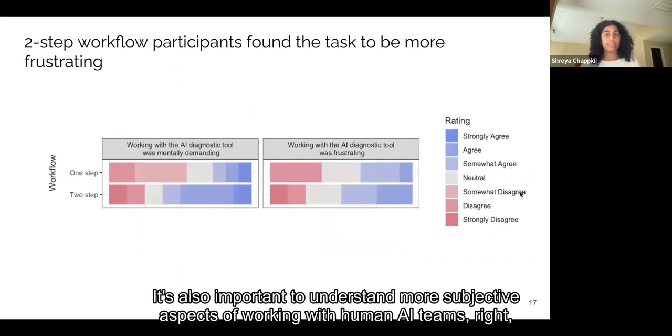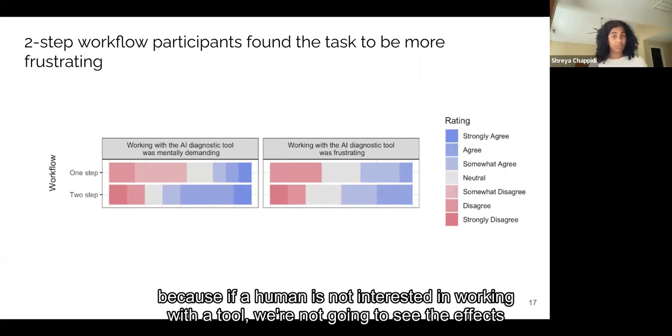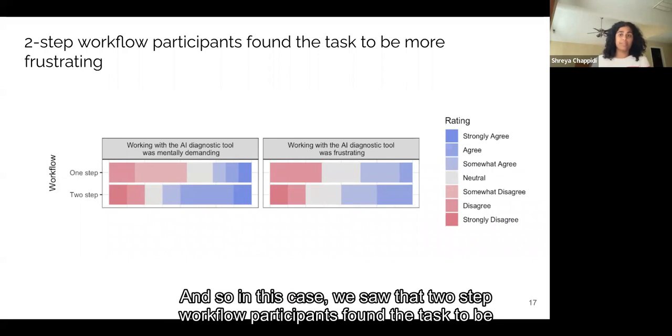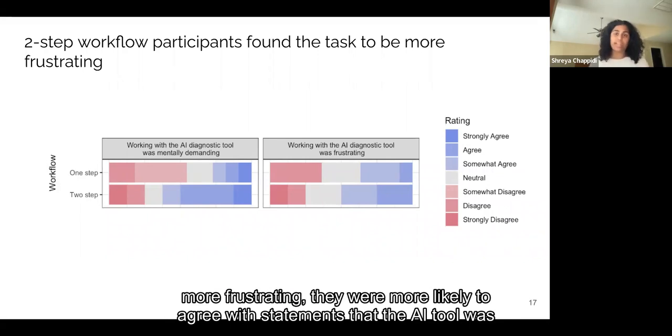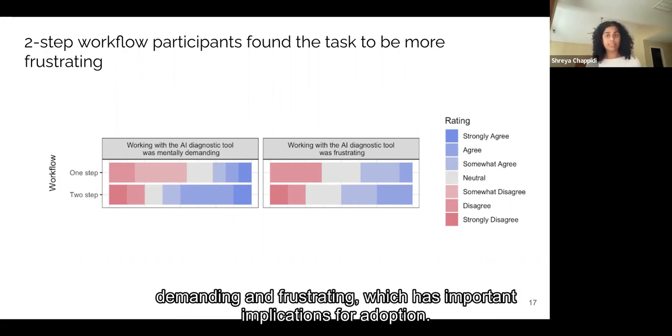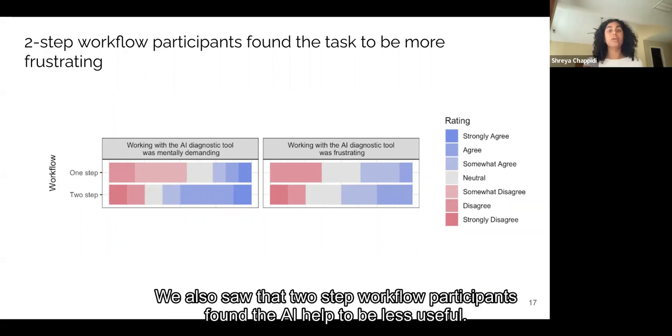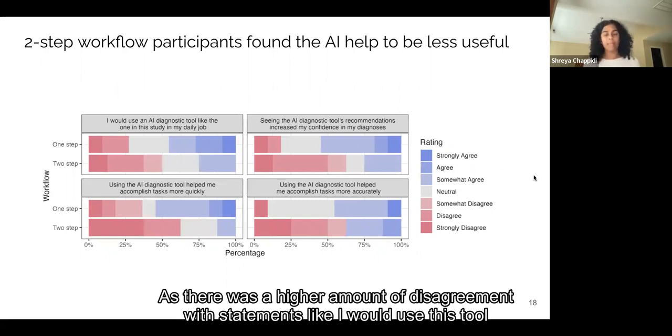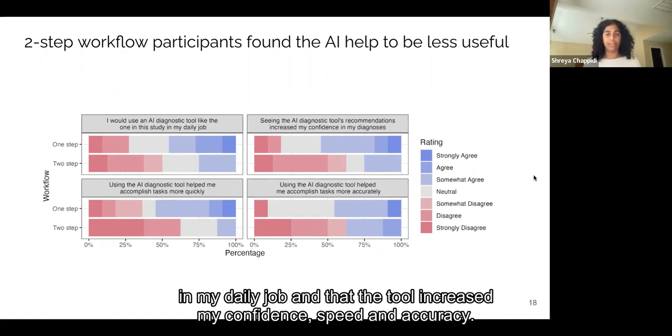It's also important to understand more subjective aspects of working with human AI teams, right? Because if a human is not interested in working with a tool, we're not going to see the effects of that tool when they're working together. And so in this case, we saw that two-step workflow participants found the task to be more frustrating. They were more likely to agree with statements that the AI tool was demanding and frustrating, which has important implications for adoption. We also saw that two-step workflow participants found the AI help to be less useful, as there was a higher amount of disagreement with statements like, I would use this tool in my daily job and that the tool increased my confidence, speed and accuracy.